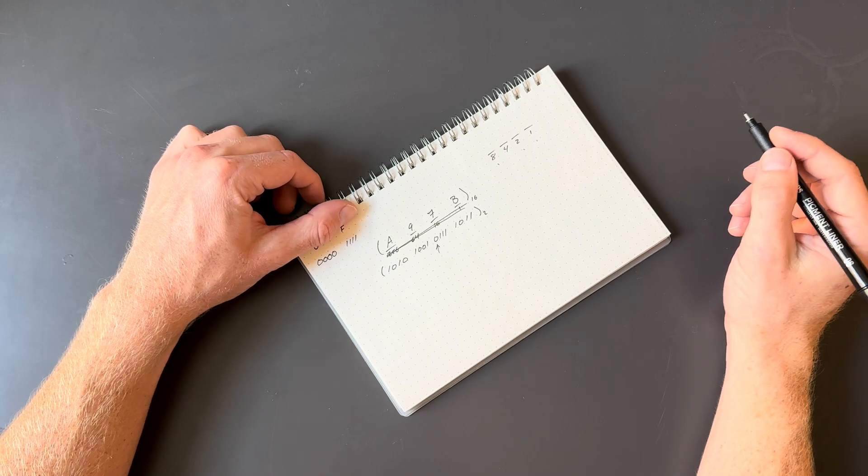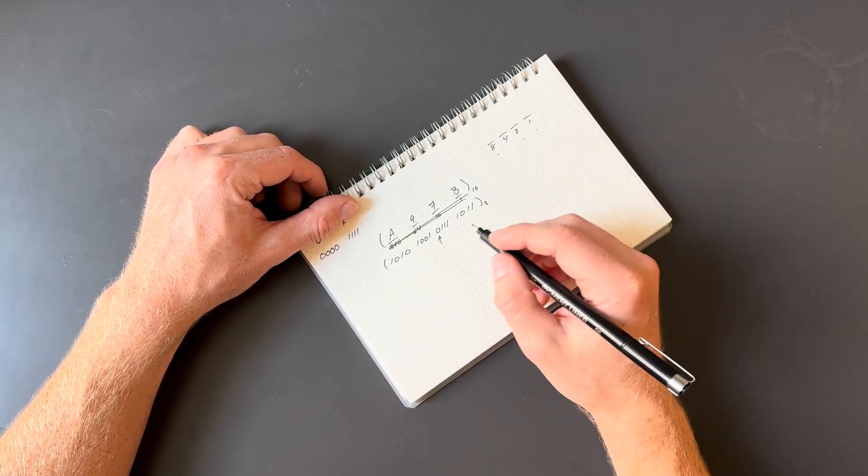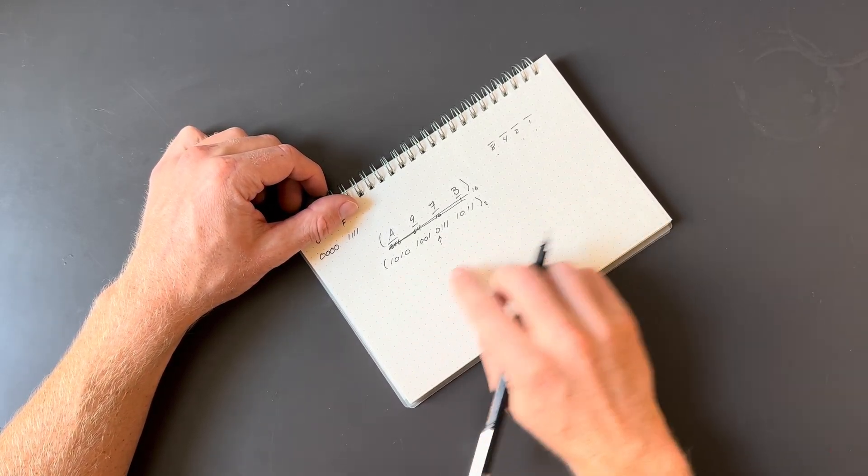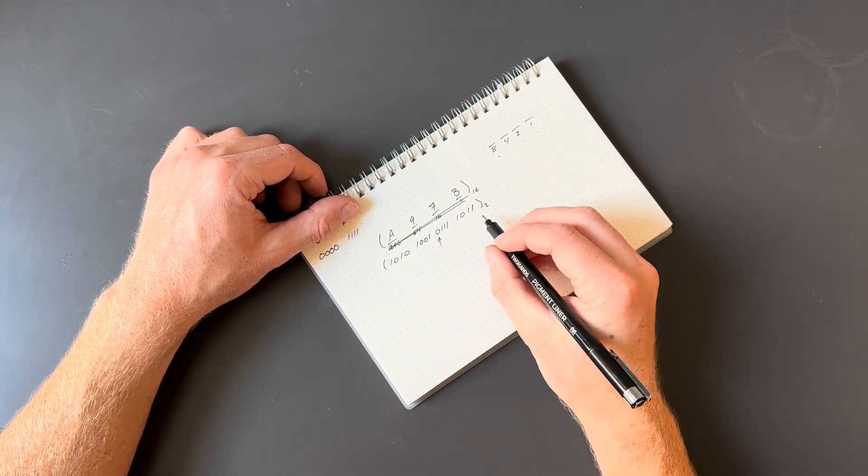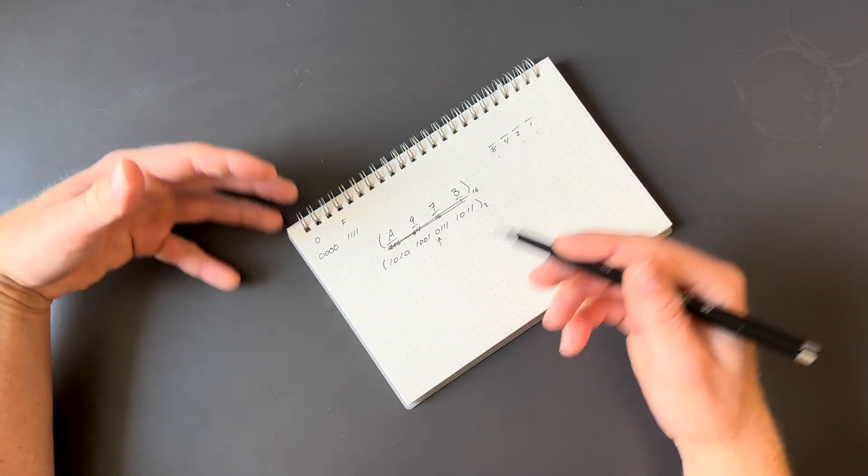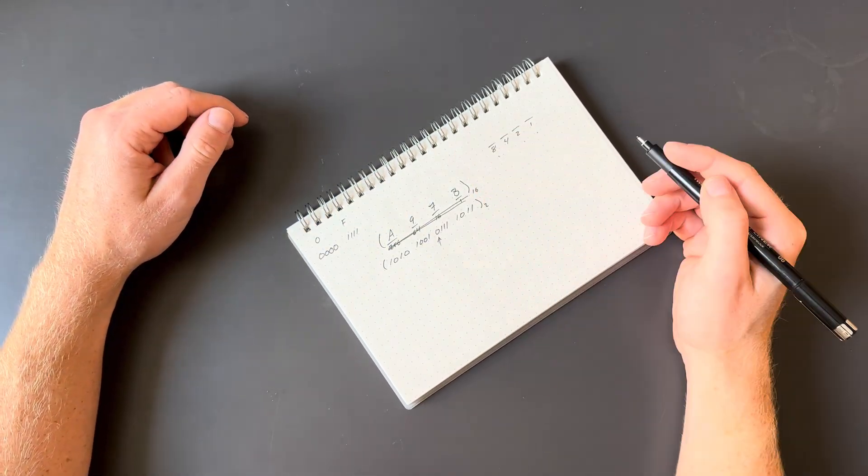And the same thing works in reverse. Same thing is true in reverse, where if we have a binary number that's long and we don't want to bother going through the decimal system, we can go directly to hexadecimal.